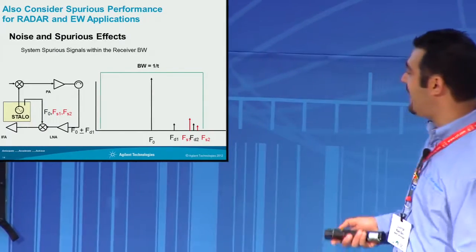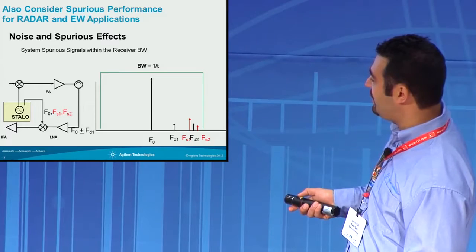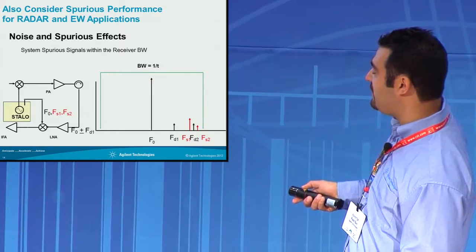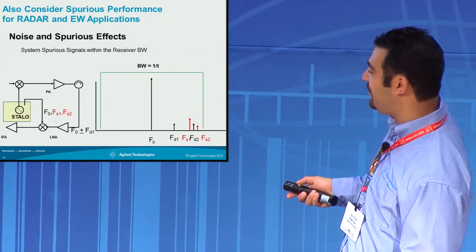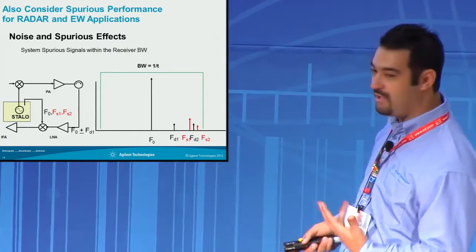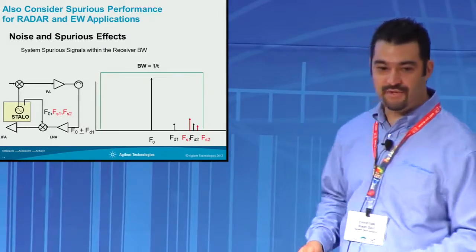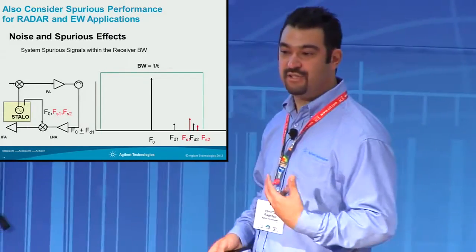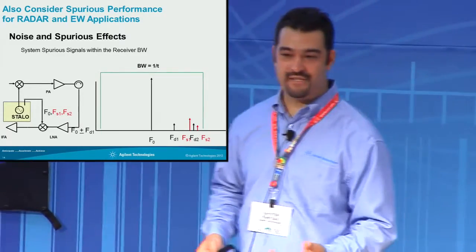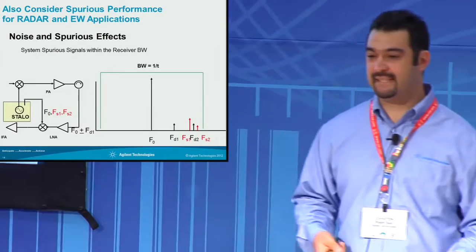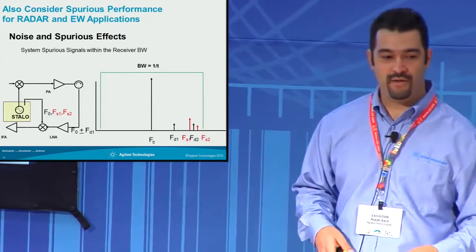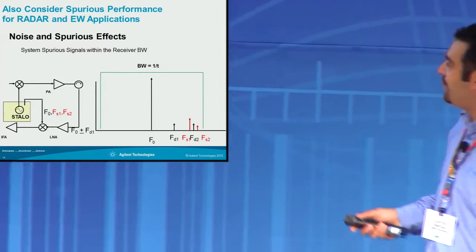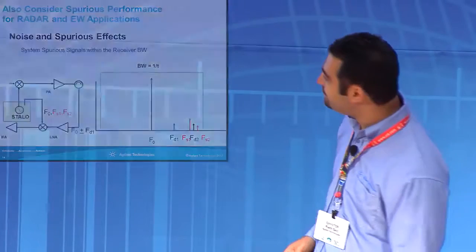If you have a radar return signal at FD1 or FD2 and you have spurs coming from your LO adjacent to those return signals, that could confuse your radar system and ultimately degrade the sensitivity of your whole system. So those are other considerations in phase noise.